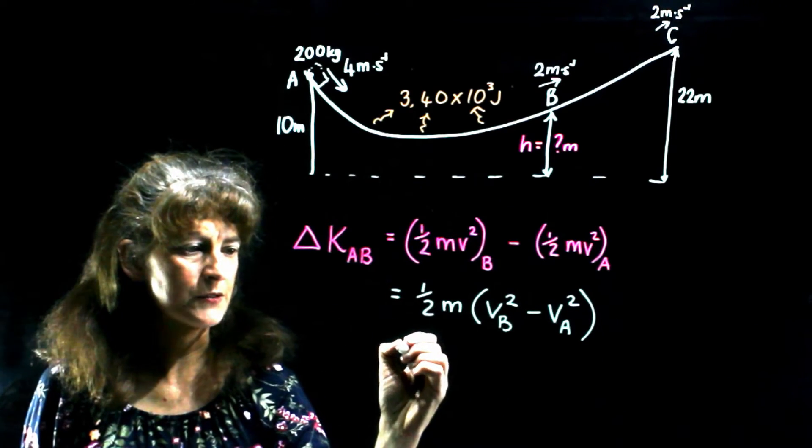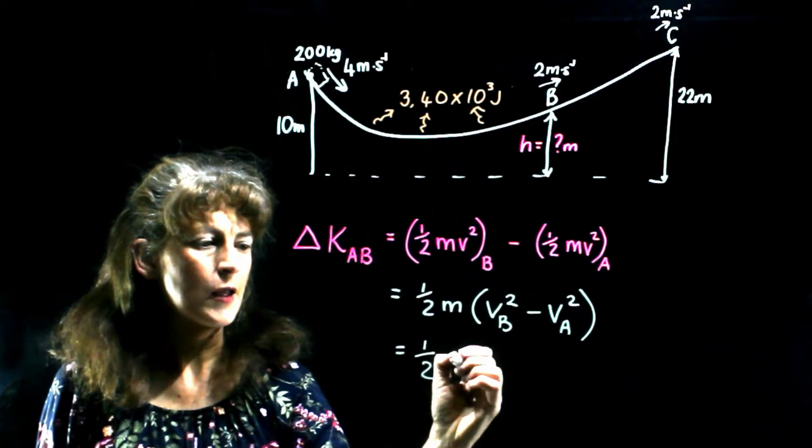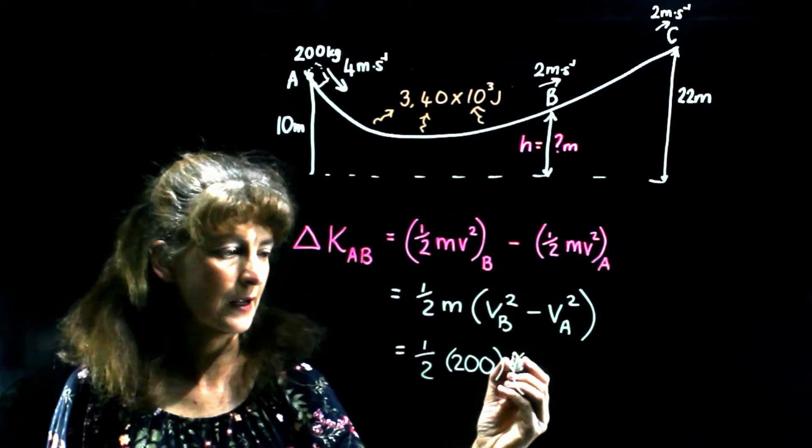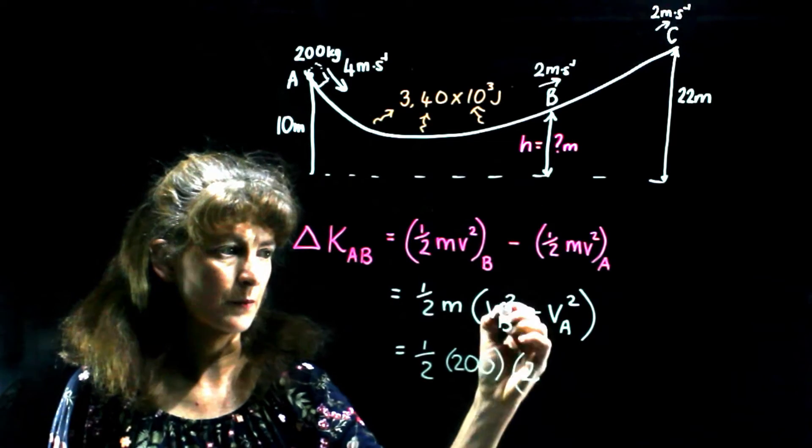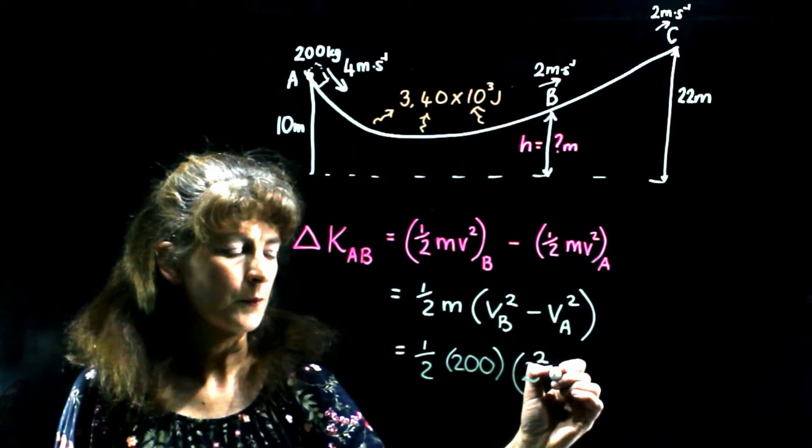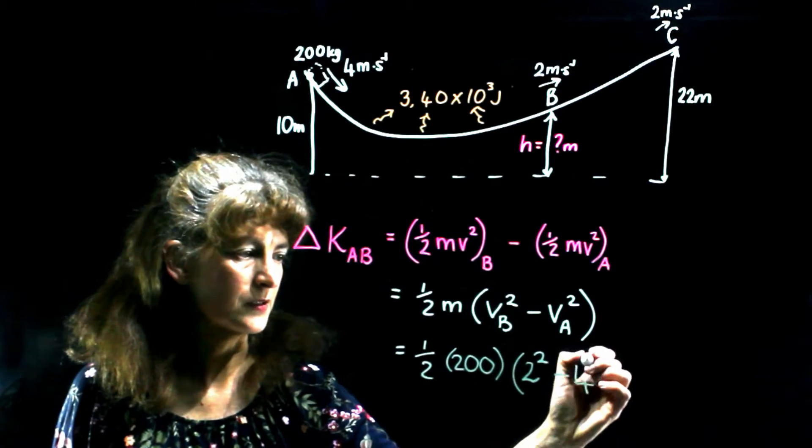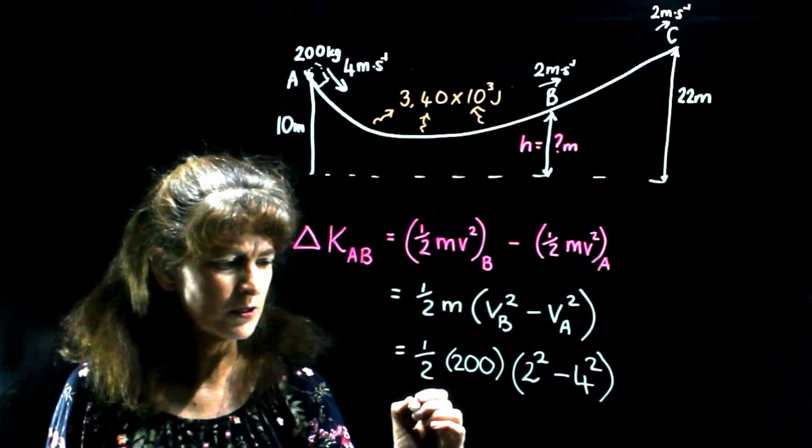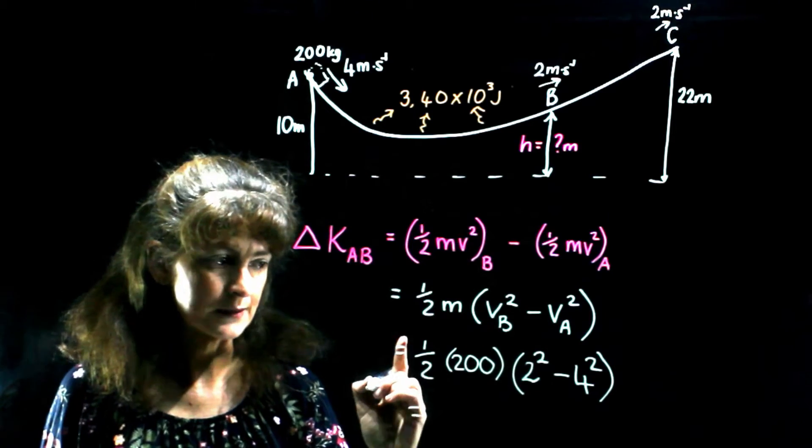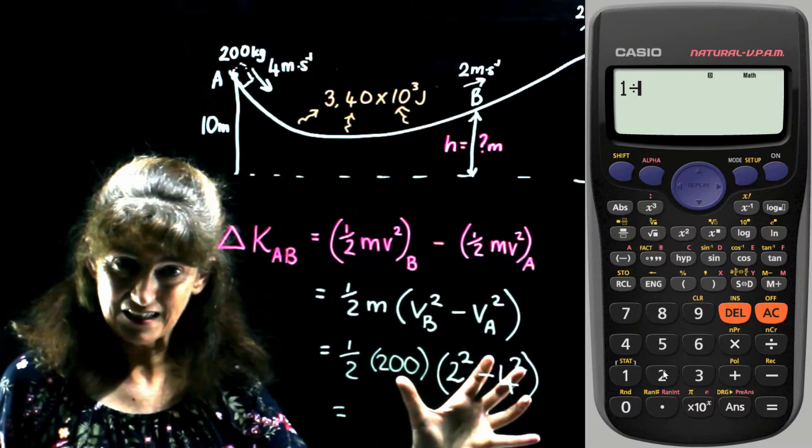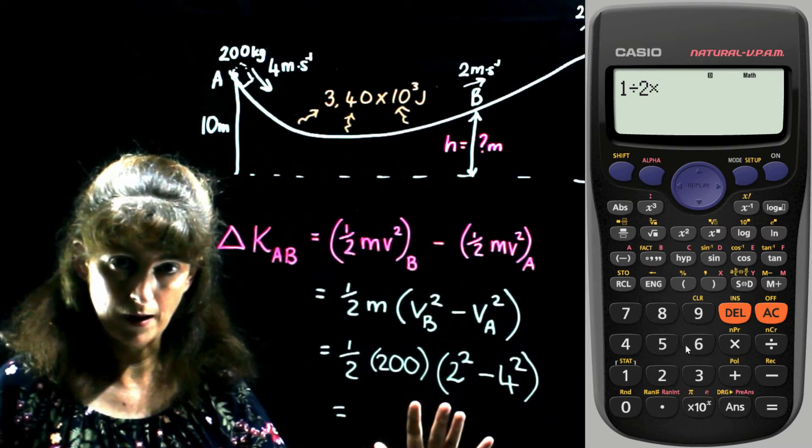And then we just substitute. m is 200 kilograms. Velocity at b is 2 meters per second. And that must be squared. Minus velocity a day, 4 meters per second. And that must be squared. So actually, the only tricky thing about this is the calculator work. If you put this into your calculator exactly like this, with the brackets, everything will be fine.